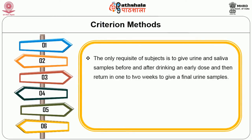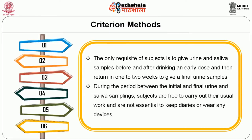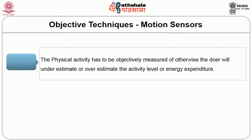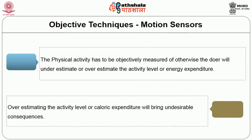The only requirement of the DLW method is that the subject gives urine and saliva samples before and after drinking an initial dose, then returns in one or two weeks to give the final urine sample. During the period between samples, subjects are free to carry out their usual activities and are not required to keep diaries or wear any devices. Physical activity must be objectively measured; otherwise, the individual may underestimate or overestimate their activity level or energy expenditure.